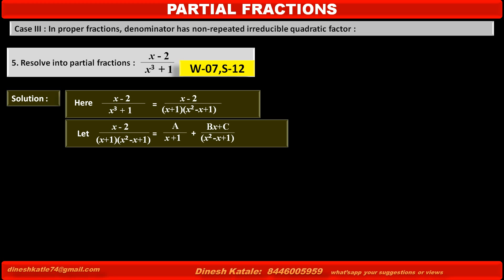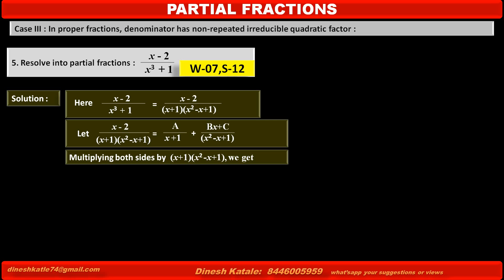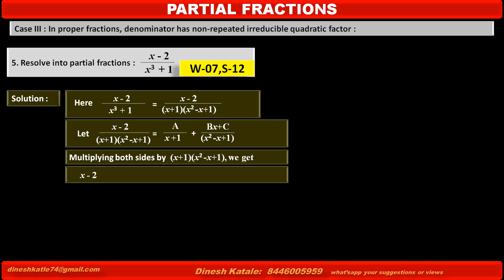To remove the denominators, multiply both sides by (x plus 1)(x squared minus x plus 1), which is the LCM of the denominators. The left-hand side becomes (x minus 2), equal to A times (x squared minus x plus 1) plus (Bx plus C) times (x plus 1). Consider this as equation 1.